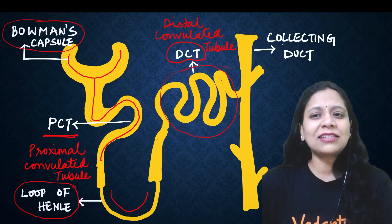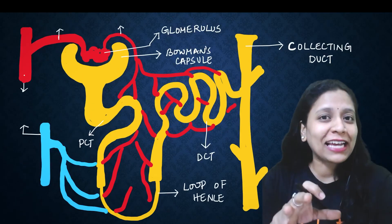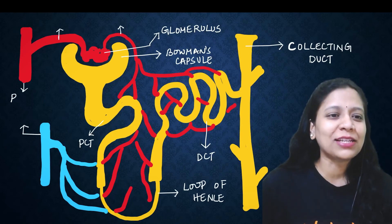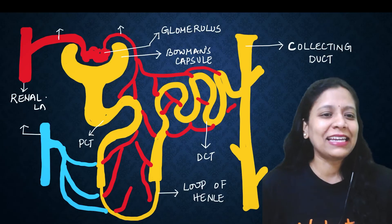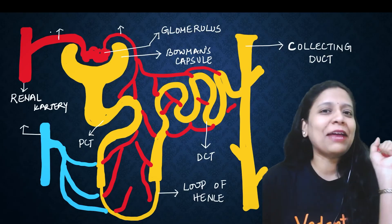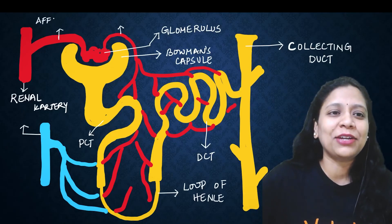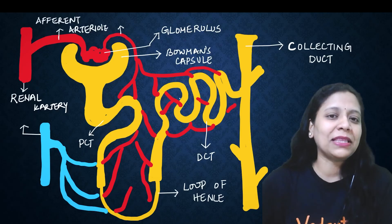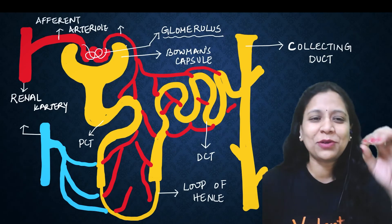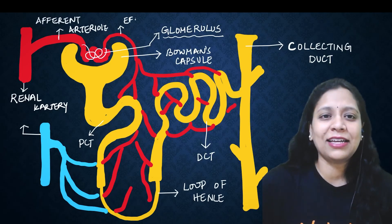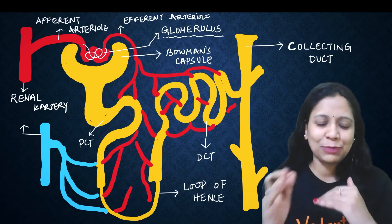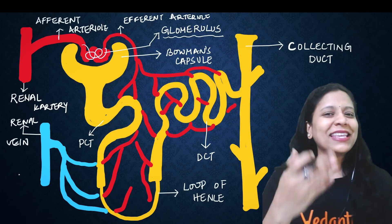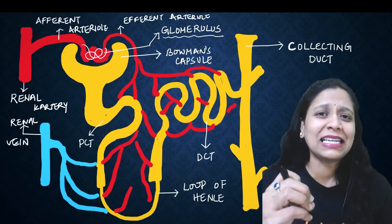The U-turn is the loop of Henle, discovered by Henle. Then the second bending is the DCT — distal convoluted tubule. PCT and DCT full forms are very important — one mark for expanding them, frequently asked. Finally, the nephron ends with the collecting duct. From glomerulus, the efferent arteriole comes out, blood capillaries spread, and it exits as the renal vein.